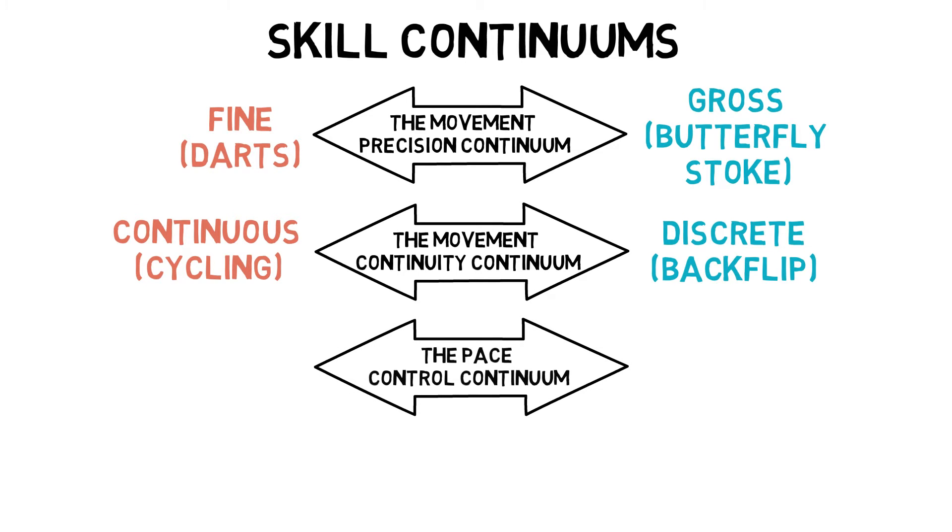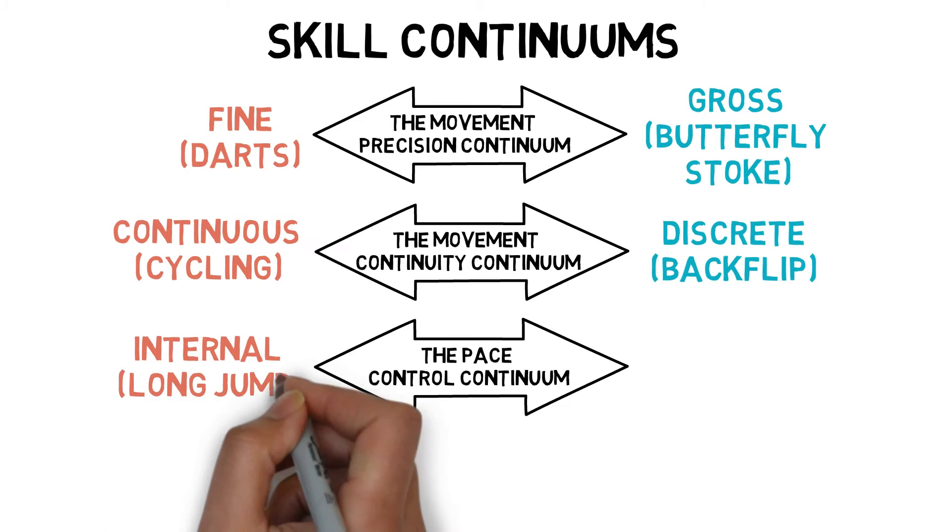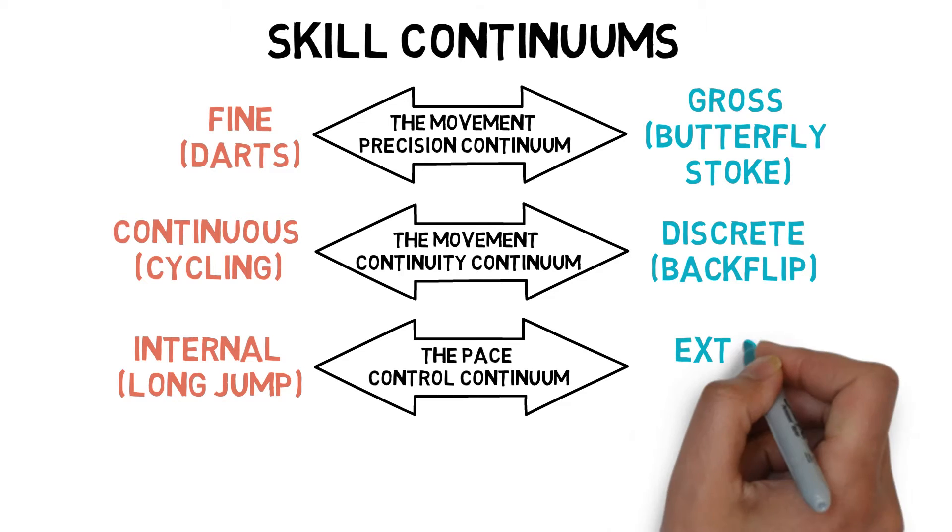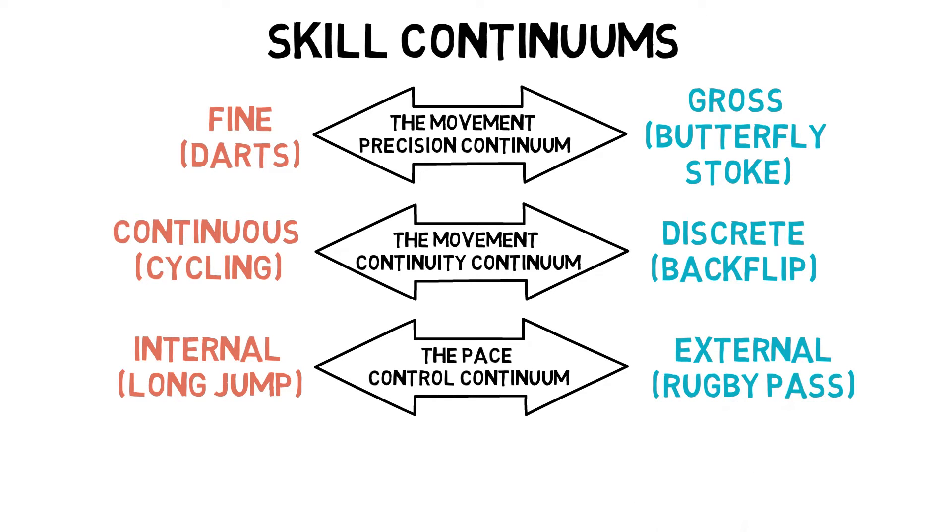The pace-control continuum deals with internal skills, which are self-paced such as a long jump, and external skills, which are controlled by other factors such as a rugby pass.